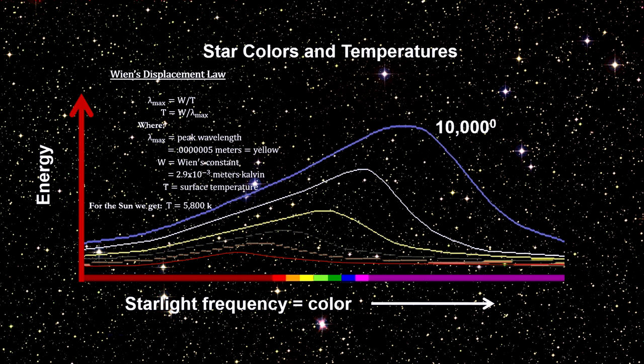So the bottom line is, measure the color of a star by the frequency of the light it emits, and you've determined its temperature. It's that simple.